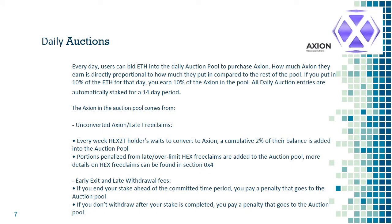The daily auction: putting tokens and value into your pocket. To get Axion, it needs to be claimed by HEX 2T holders. The longer they wait to claim, the more penalties they face — about 2% of their total per week. This 2% is added into a daily auction pool where people can bid using ETH on the Axion tokens within it. If you bid 10% of the ETH on that day, you get 10% of the pool rewards.